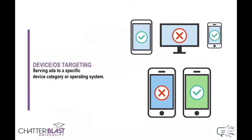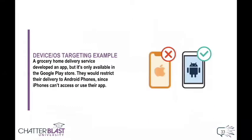Another method of targeting is by device or operating system. This is helpful for companies that have apps designed for specific devices. Why serve to Apple users if Apple users can't access your product? An interesting fact is that only 44% of people in the US are using Apple smartphones — that's less than half — so this example isn't so far from possible.